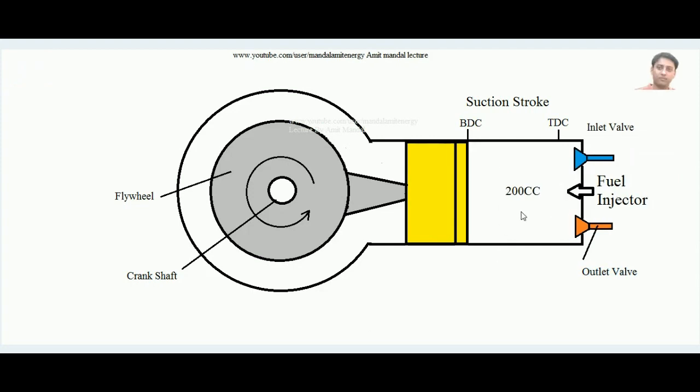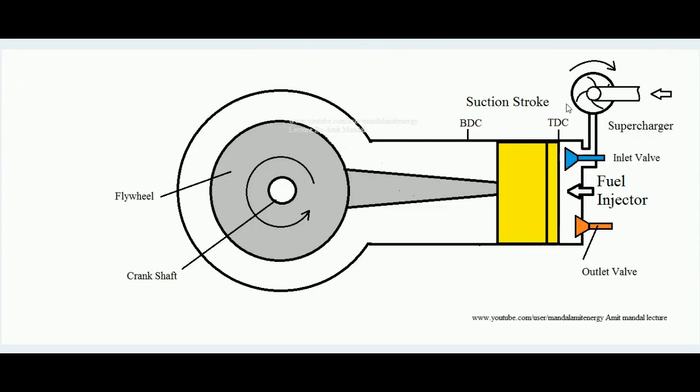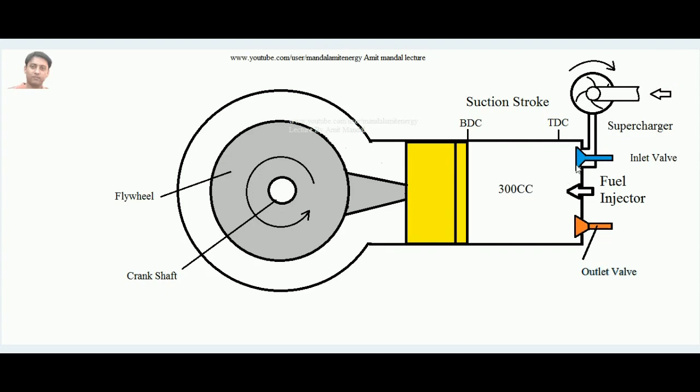Instead of 200 cc, in the naturally aspirated engine, if the displacement of this piston is 200 cc, it is sucking 200 cc of air inside. But in case we are implanting a supercharger, then during the suction stroke, by this forceful pushing of air inside, 100 cc more is entering inside.